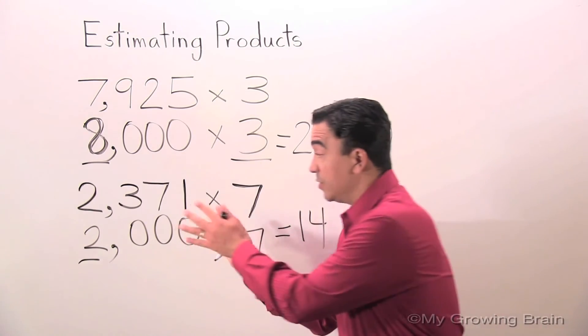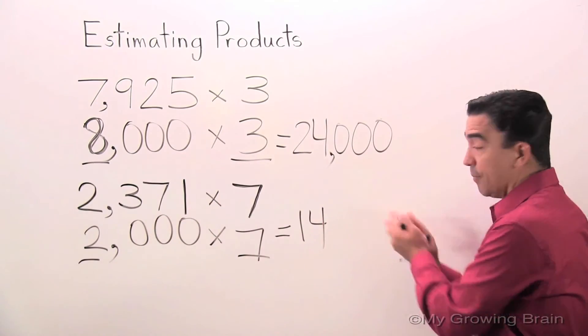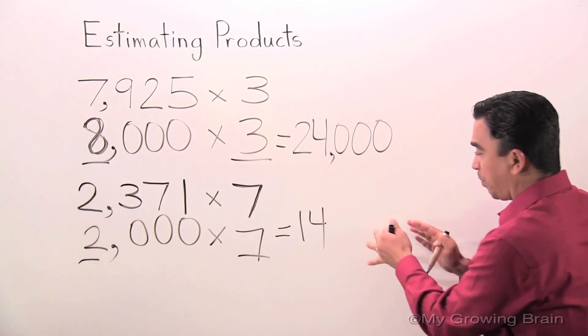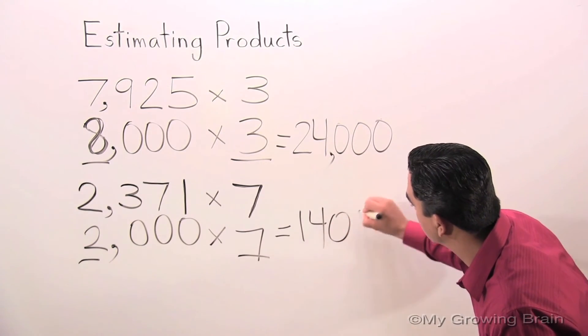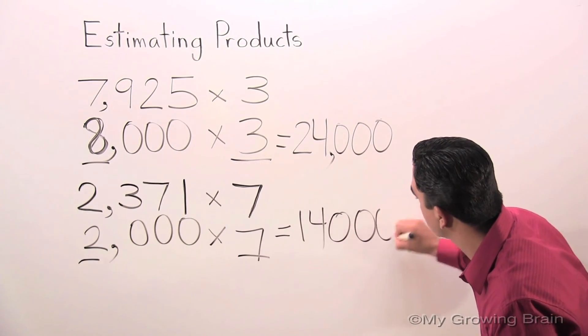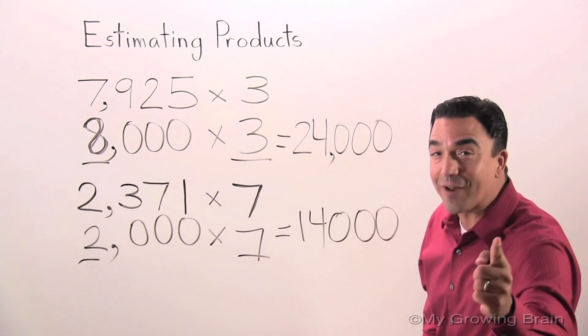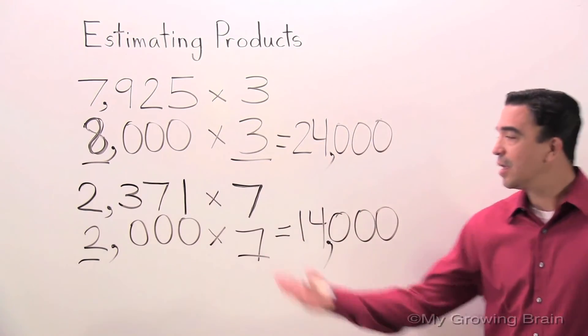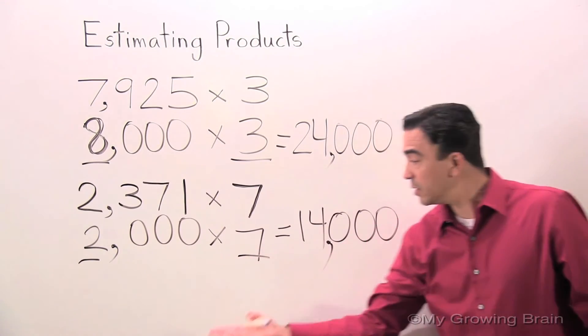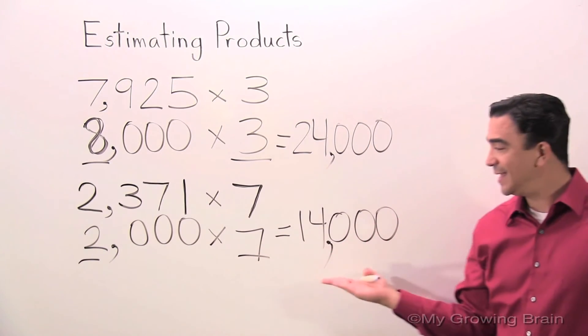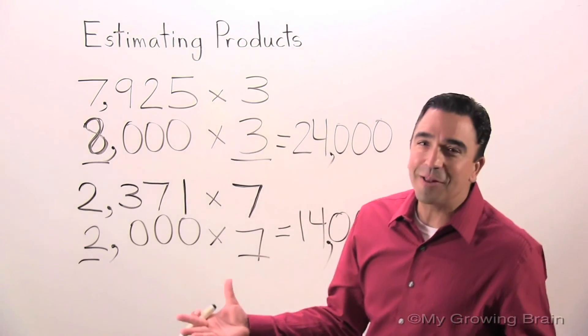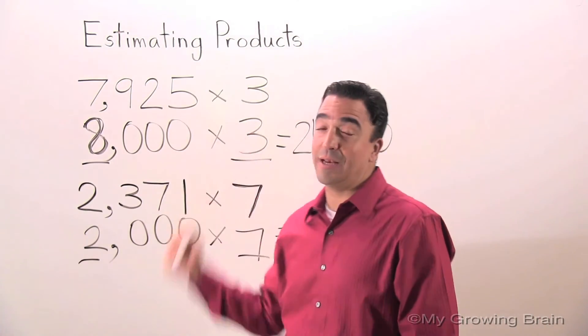Once again, I'm going to take my three zeros and put them after the 14. Don't forget the comma. 2,000 times seven equals 14,000.